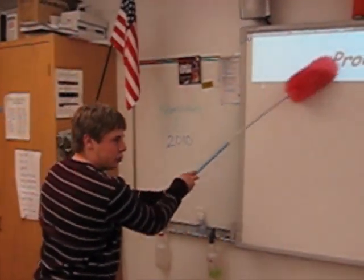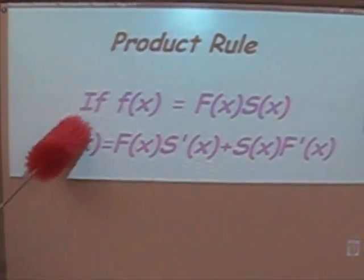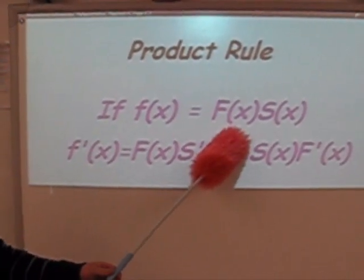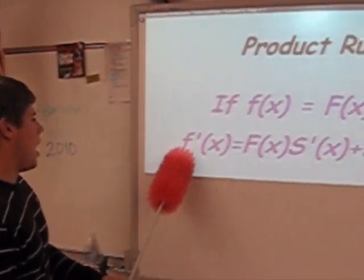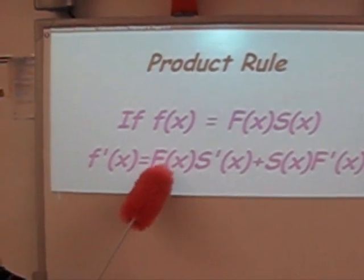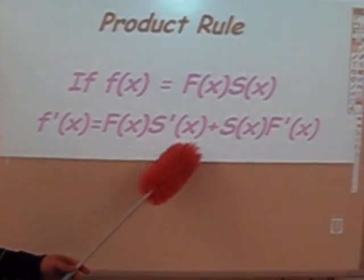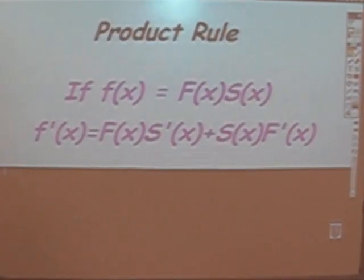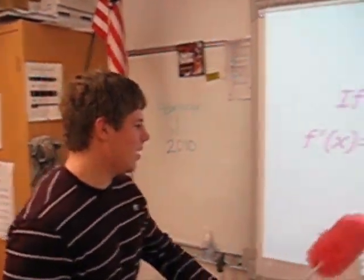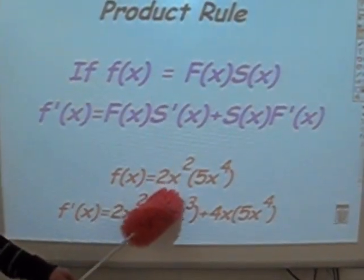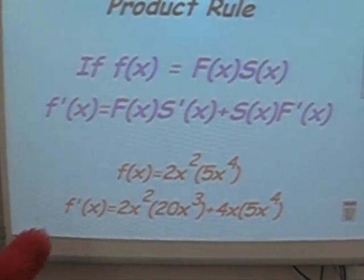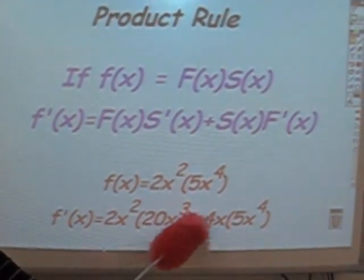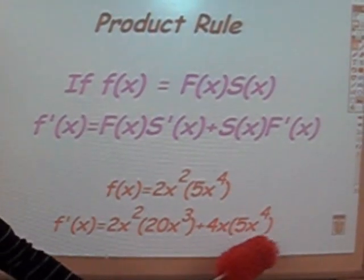This is the product rule. If f of x is equal to first of x times second of x, then f prime of x is equal to the first of x times the second derivative plus the second of x times the first derivative. Here is an example problem. If f of x is equal to 2x squared times 5x to the fourth, then f prime of x is equal to 2x squared times 20x cubed plus 4x times 5x to the fourth.